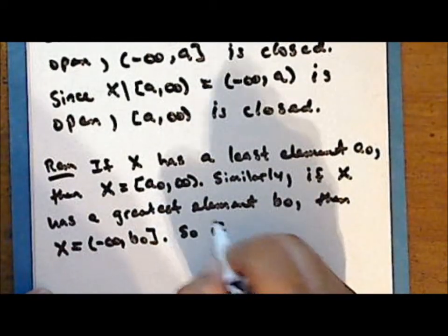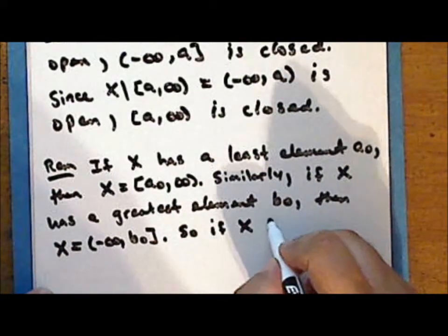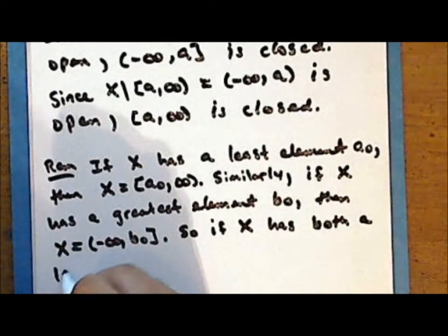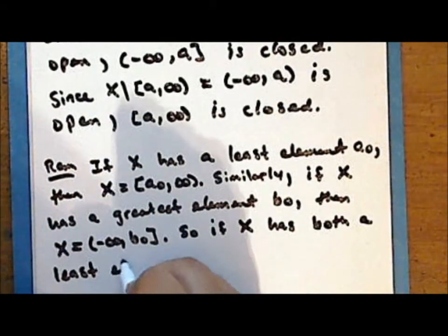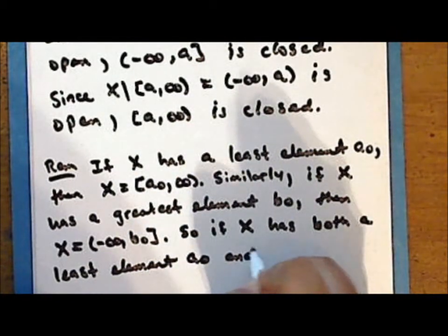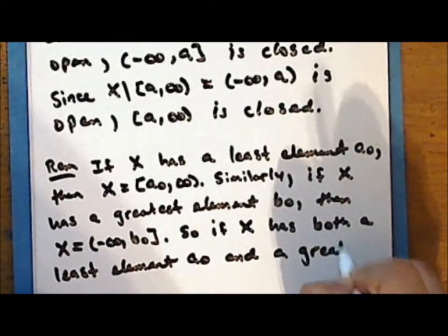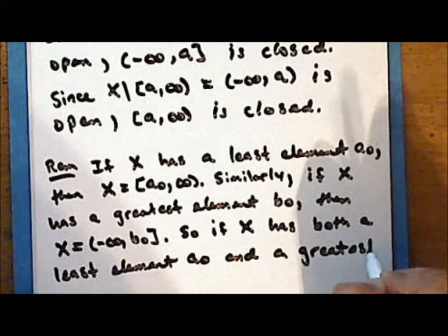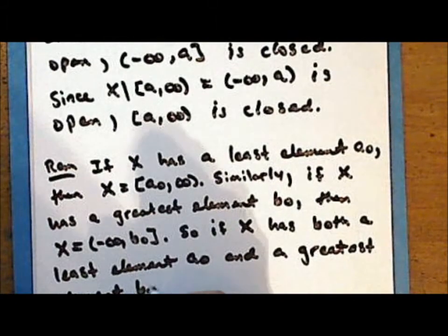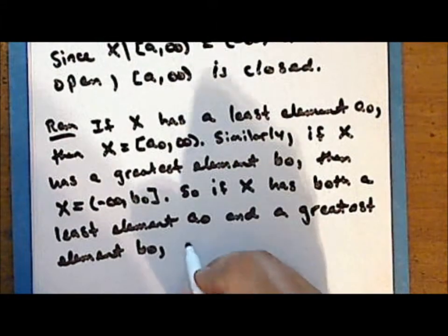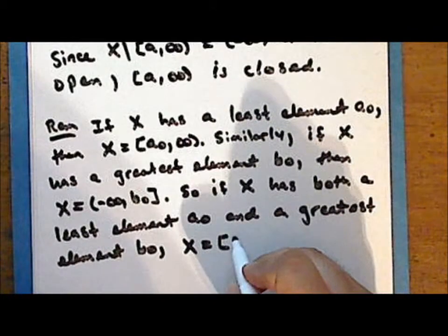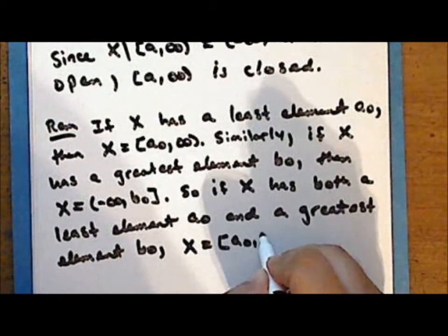So if the underlying set has both a least element a sub-naught and a greatest element b sub-naught, then the entire set can be represented as the closed interval from a sub-naught to b sub-naught.